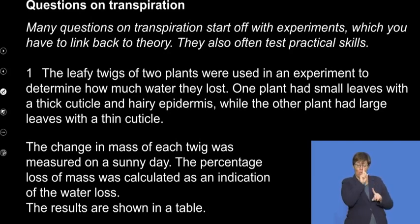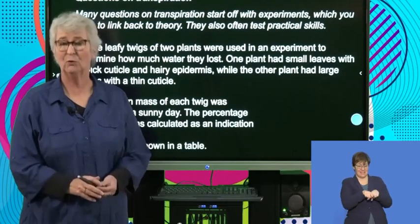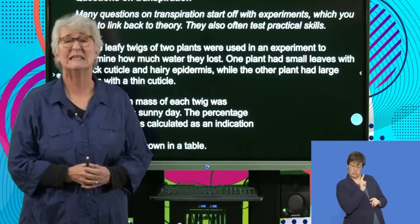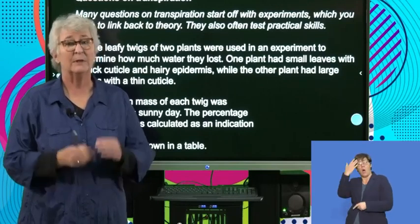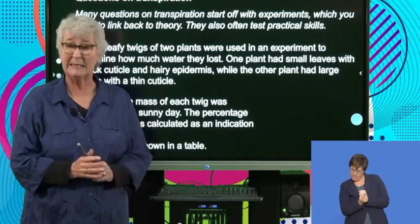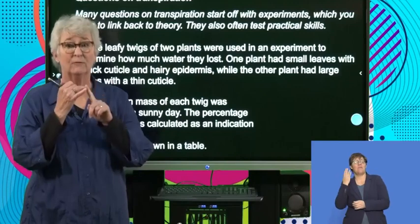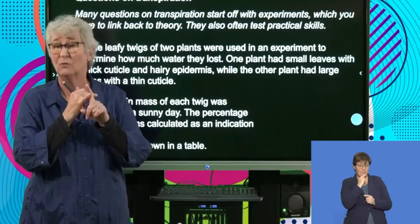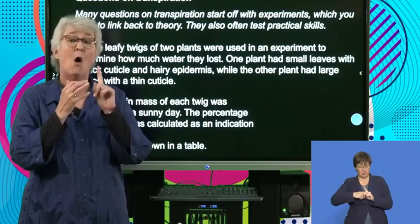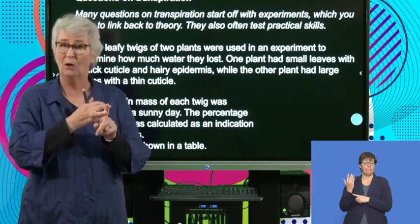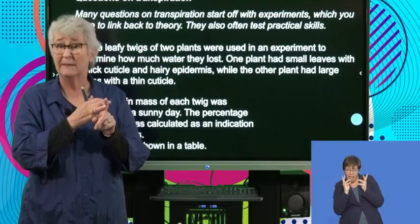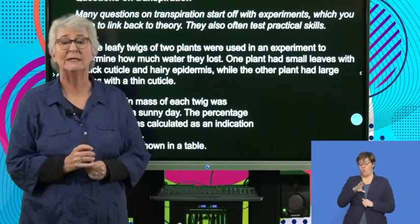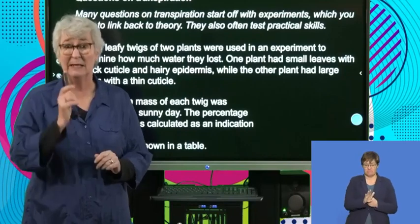Many questions on transpiration start off with experiments or use an experiment as an example. The problem is this is not necessarily an experiment that you have seen or know about, but you have to look at it, work out what is happening, and link it to transpiration — either a change in environmental factors such as wind, humidity, light intensity, and temperature, or how a plant's leaves are structured to lessen the amount of transpiration. You need to be on the ball so you can pick up what you need from each experiment in the question.